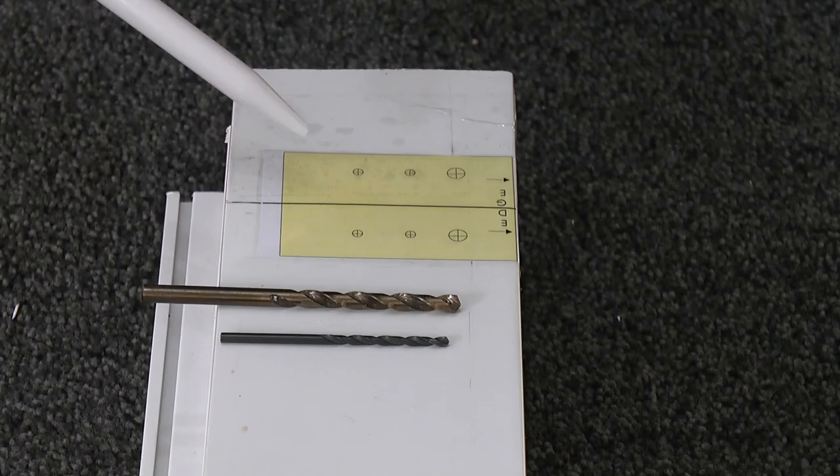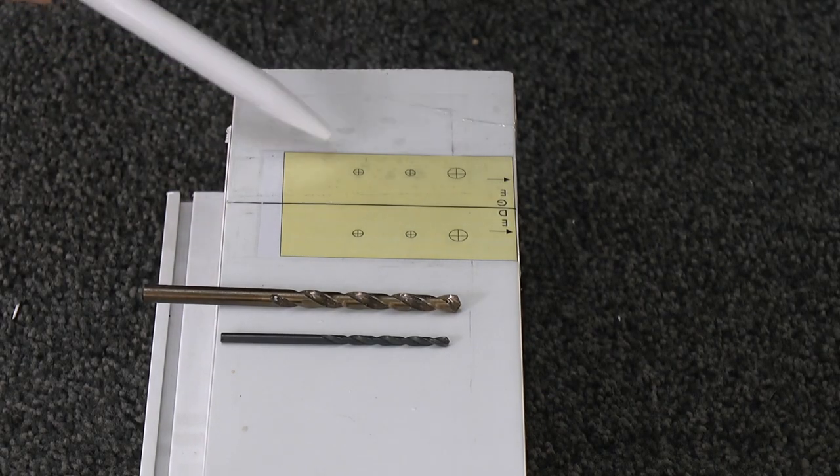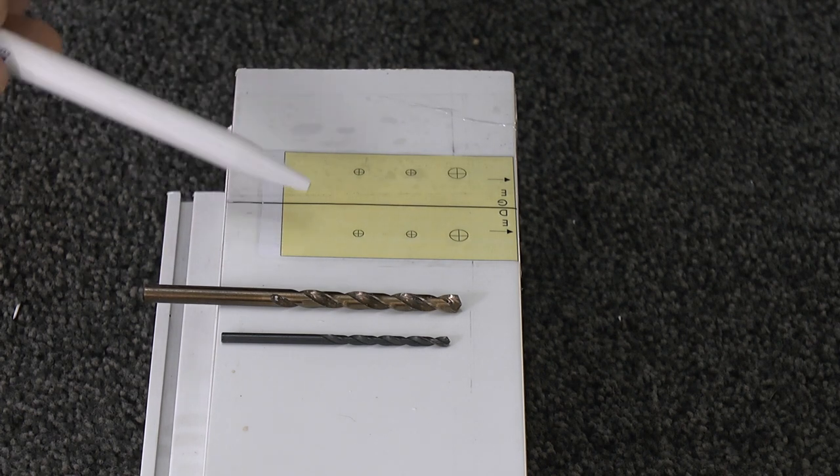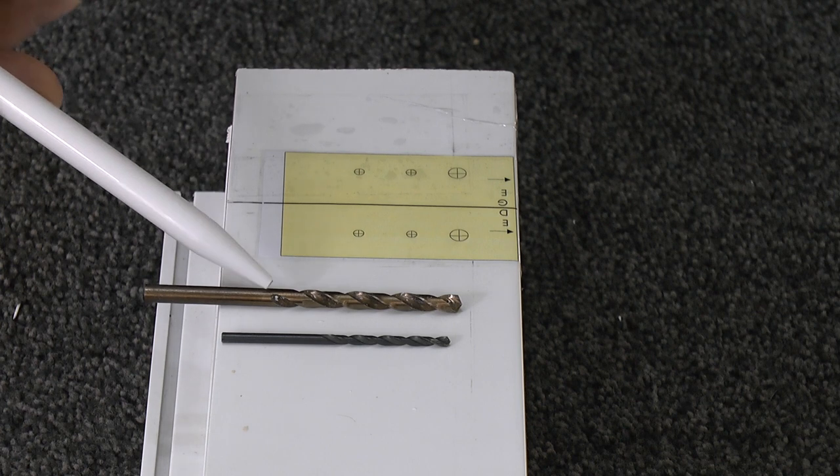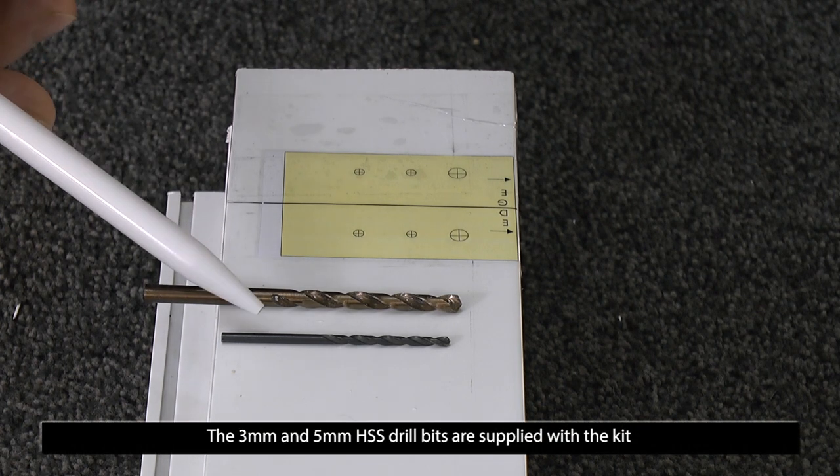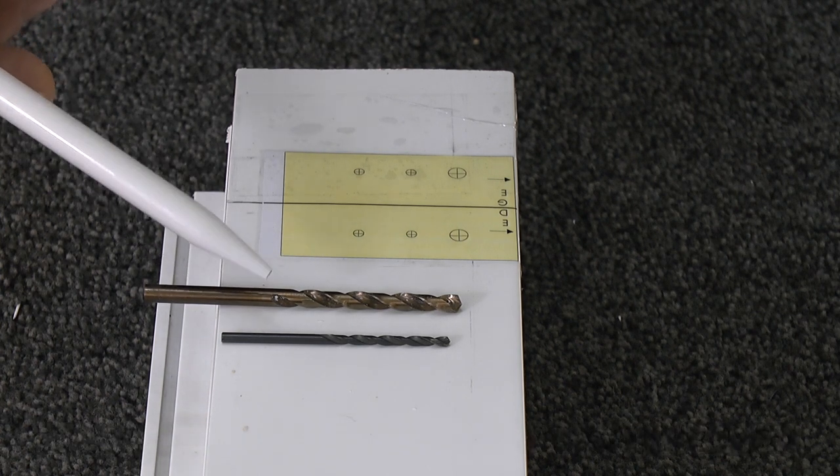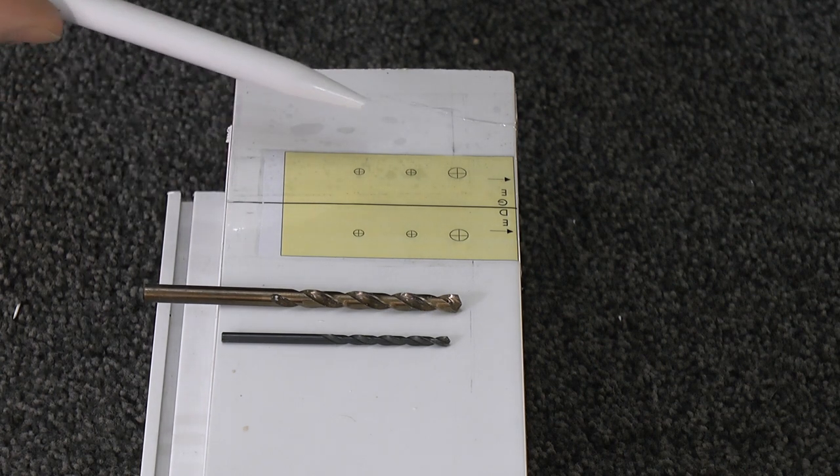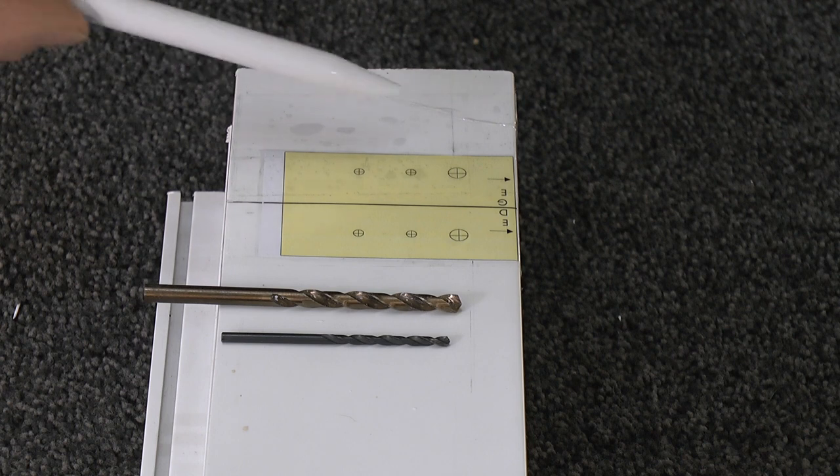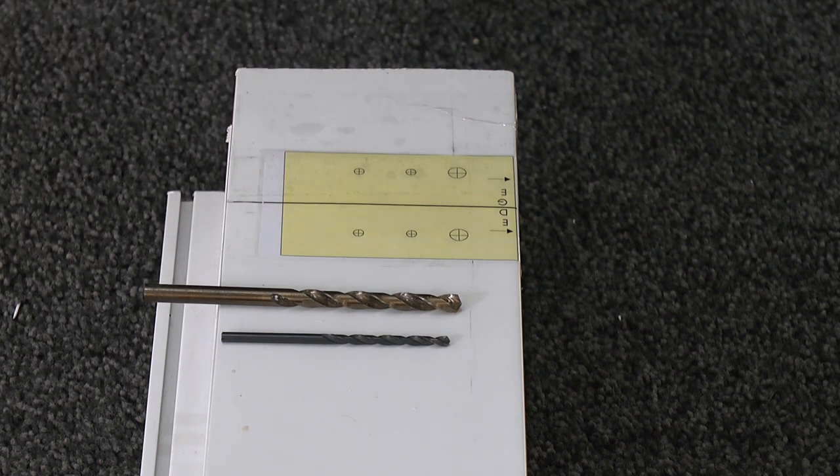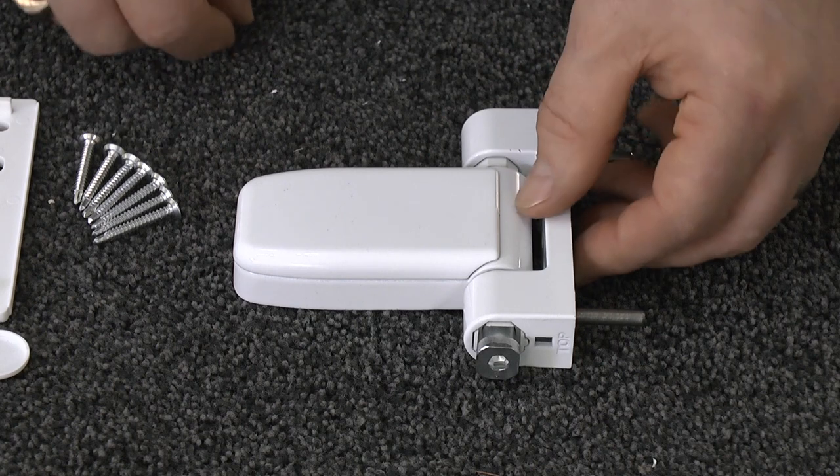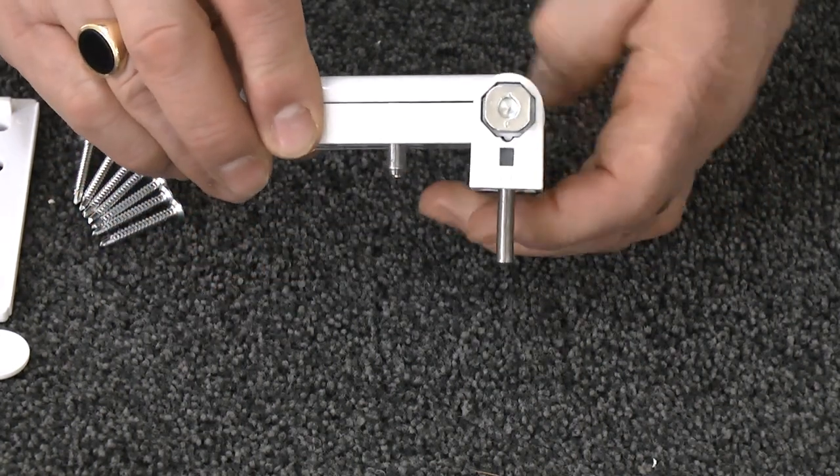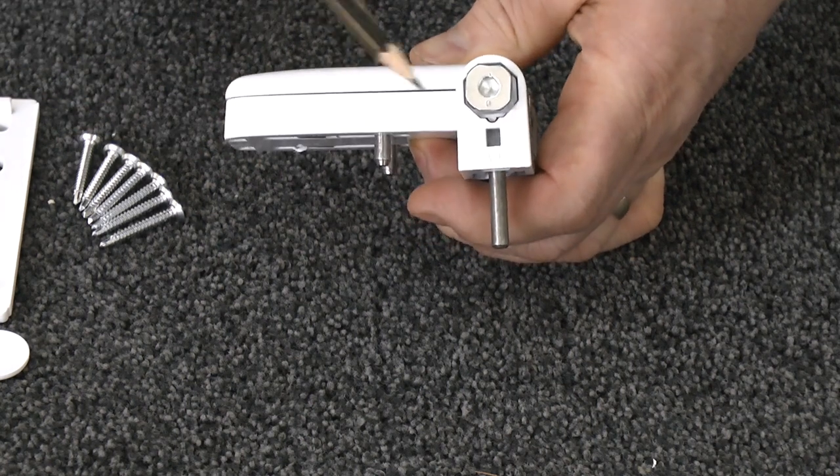We've got the template now set in place, and on this occasion we've held it down with cello tape. The next requirement you will need to find is a five millimeter and a three millimeter high speed steel drill bit. Then we're going to show you how to disassemble the new hinge to put in place after you've drilled the holes.